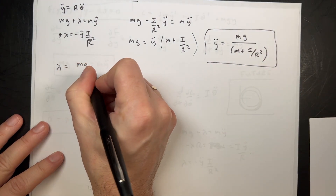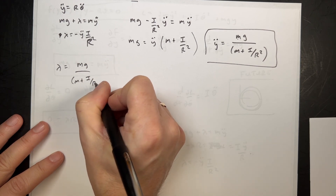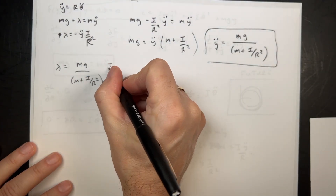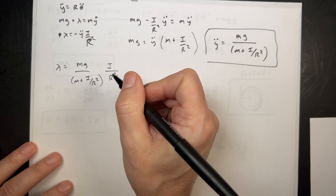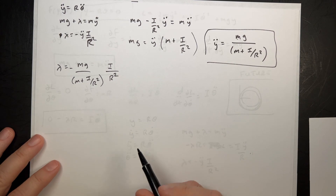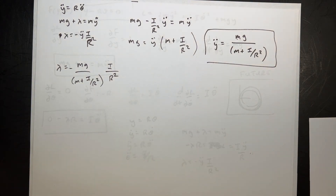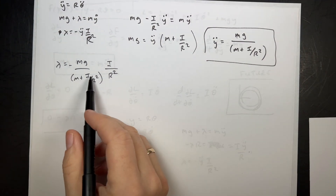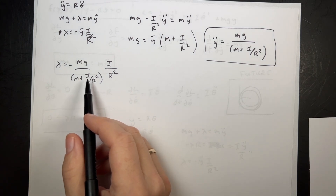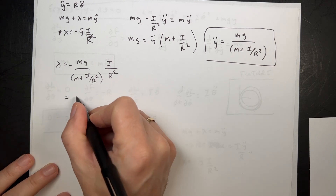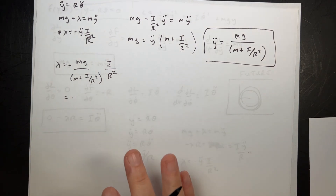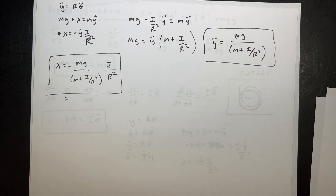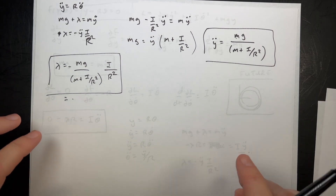Now we can find lambda. Lambda equals negative (I / R squared) times Y-double-dot, which gives: lambda equals negative M·G·(I/R²) divided by (M + I/R²). We could simplify further, but it is correct. Now I want to solve this another way — using non-Lagrangian mechanics.